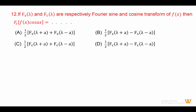Twelve: if Fs(lambda) and Fc(lambda) are respectively the Fourier sine and cosine transforms of fx, then the Fourier cosine transform of fx cos(ax) is one half times [Fc(lambda plus a) plus Fc(lambda minus a)]. Answer is option C.